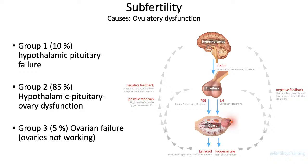According to the WHO, ovulatory disorders can be classified into three groups. The most common is group 2, making up about 85%. Group 1, making up about 10%, is hypothalamic pituitary failure — a problem with either the hypothalamus or the pituitary. Group 2 involves hypothalamic pituitary ovary axis dysfunction: the hypothalamus releases GnRH, stimulating the pituitary to release FSH and LH, which work on the ovary to release estradiol and progesterone, which then feedback to modify output from the hypothalamus and pituitary. Group 3 is ovarian failure, where the pathology is within the ovaries themselves.